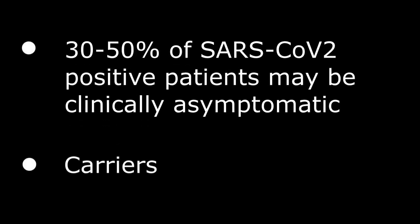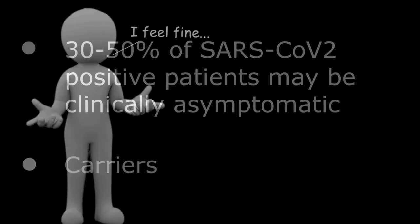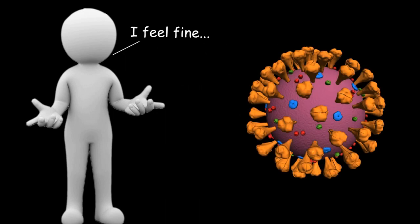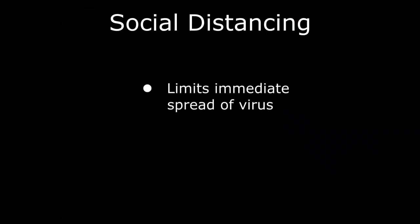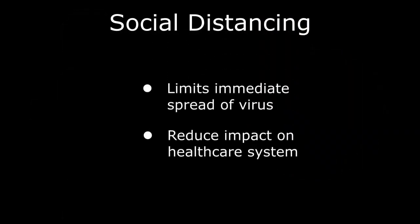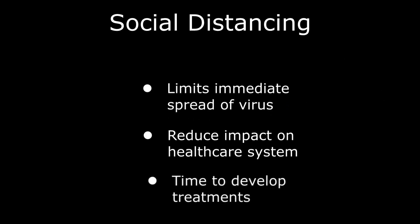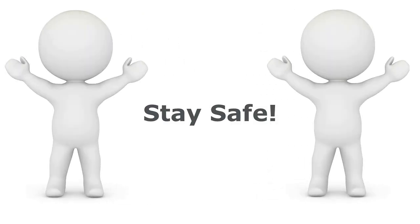This potentially high prevalence of asymptomatic carriers and rapid mutations of the virus will make an effective cure difficult. Social distancing limits the immediate spread of disease so we don't overwhelm the local healthcare system and gives us time to develop a vaccine or treatment regimen that lessens the impact of disease. In the meantime, keep your distance and stay safe. Thanks for watching.